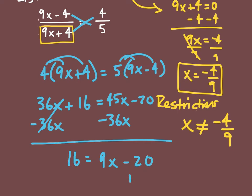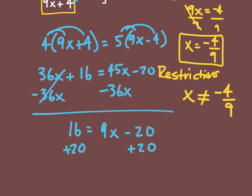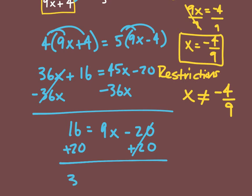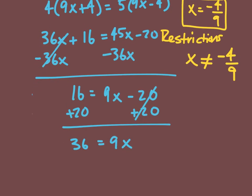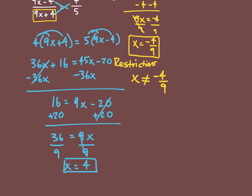From here, I want to add 20 to both sides, and so then we're going to get 36 is equal to 9x. Then we can divide both sides by nine, and you end up getting that x is equal to four.